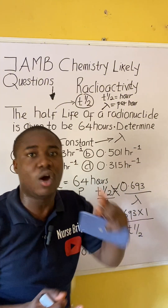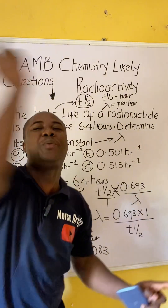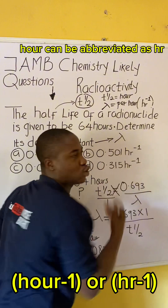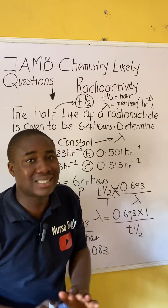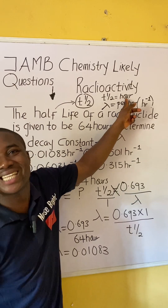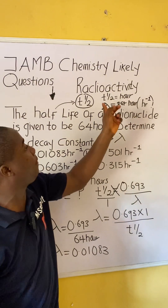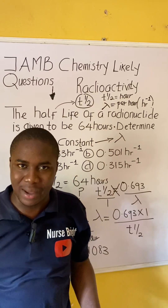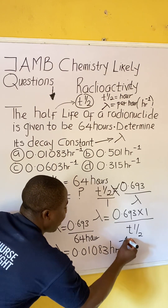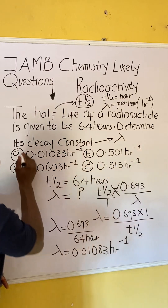For example, if half-life was expressed in seconds, the unit for decay constant would be per second. This 'per hour' is symbolized as h raised to the power of minus one (h⁻¹). The unit of your decay constant is always a function of your half-life unit. If half-life is in seconds, decay constant is per second. Since this half-life was expressed in hours, the unit of our answer is per hour, or h⁻¹. So the answer to this question is option A.